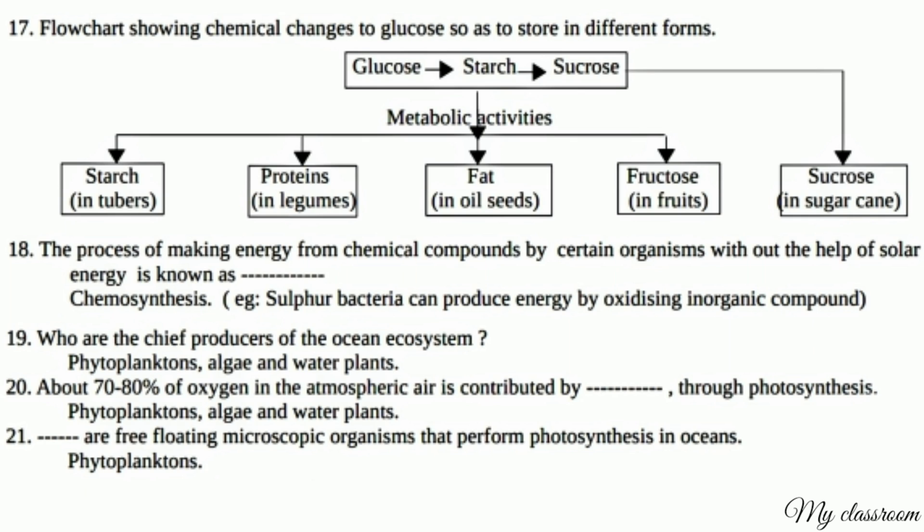Chart showing chemical changes to glucose for storage in different forms: Glucose → Starch → Sucrose → Starch in tubers; Proteins in legumes; Fat in oil seeds. Also: Fructose → Fructose in fruits; Sucrose in sugarcane.